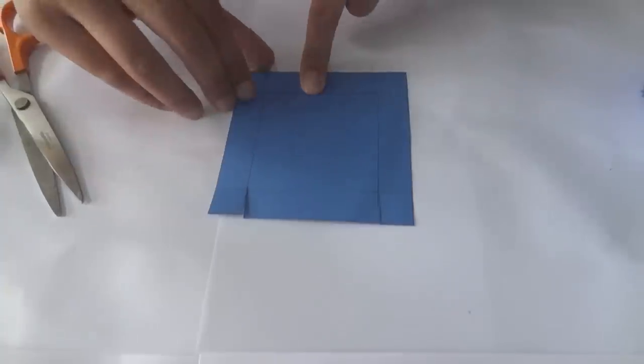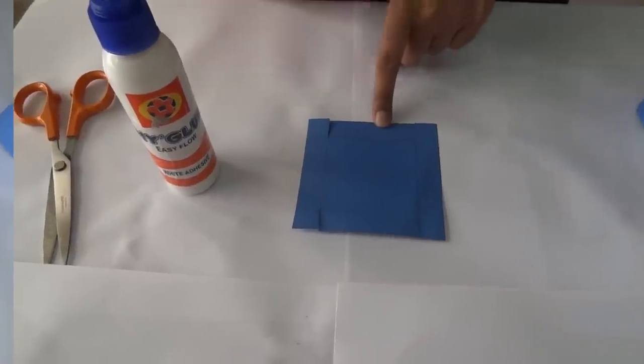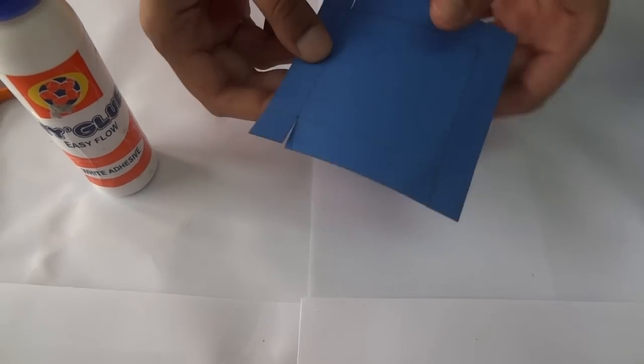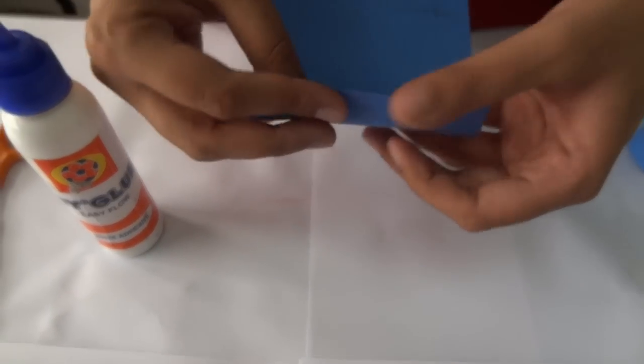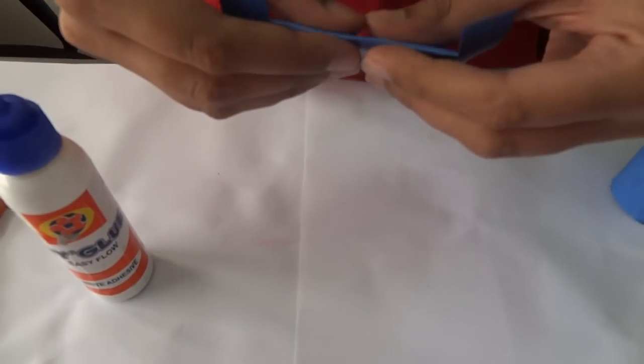Now see we have made cuts with scissors on these four areas like this. Four cuts. We now have to make foldings to make the base. Now see carefully how we have to fold. Fold along the four borders like this, all four sides.